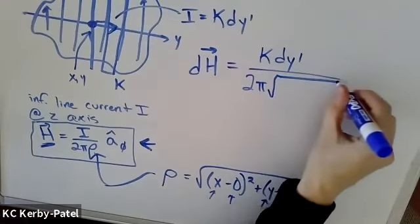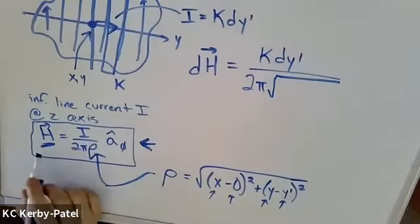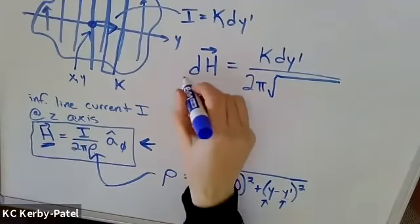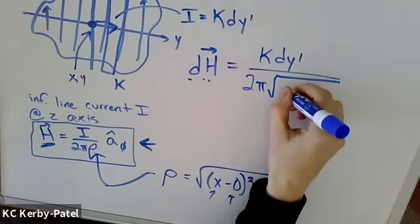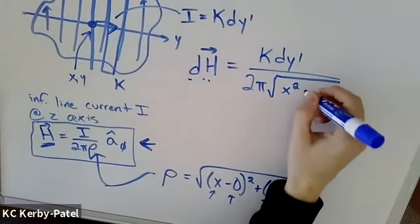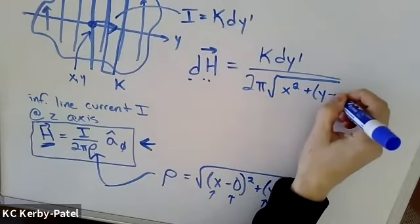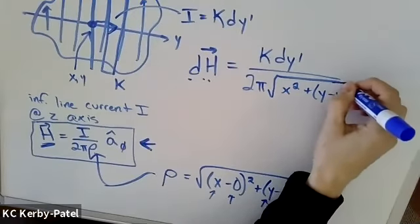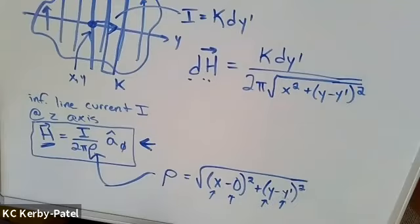So then I have the magnitude of my magnetic field differential element here. It's going to be x squared plus (y minus y prime) squared. So far so good, but now I need to figure out how to replace this phi directed unit vector.